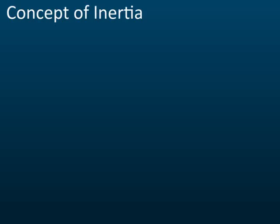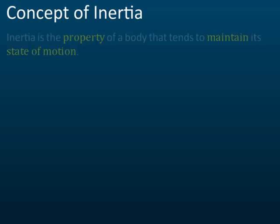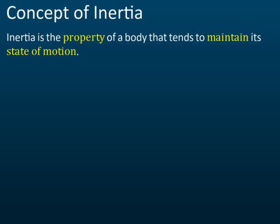The second concept is inertia. Inertia is the property of a body that tends to maintain its state of motion. You need to memorize this definition because in the exam they may ask you to give it: it is the property of a body that tends to maintain its state of motion.